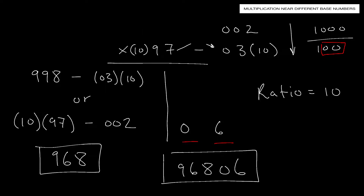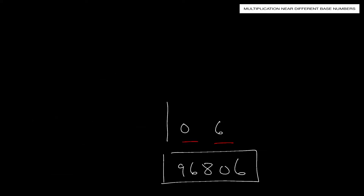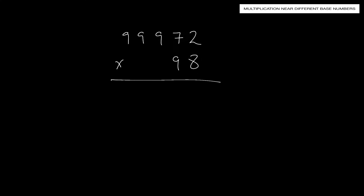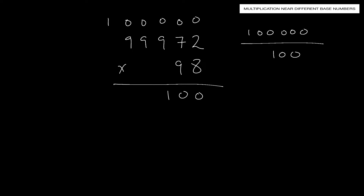Let's go over another problem with a bigger ratio. Looking at the numbers, 99,972 is close to base 100,000 and 98 is close to base 100. So we have 100,000 over 100. Crossing out zeros, our ratio equals 1,000.